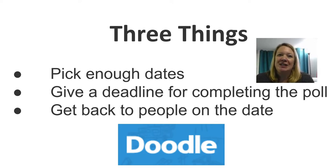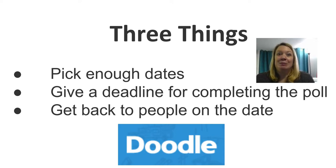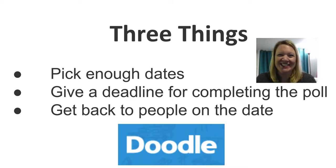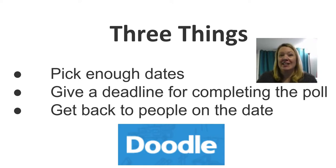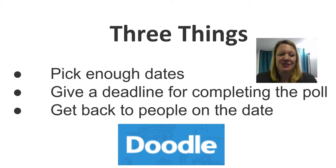The first thing you want to do is pick enough dates. We are all very busy in library land and you would be surprised how full people's calendars are. I've arranged probably over 50 Doodle polls in my life, sometimes with two or three other people, sometimes with 10 or 15 other people. And I always think I select enough dates and times in the polls, and a lot of times I don't. So pick more dates than you think.